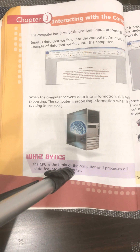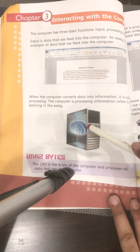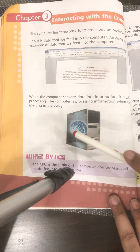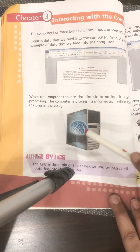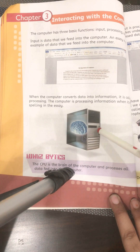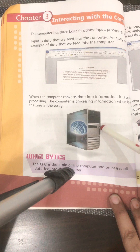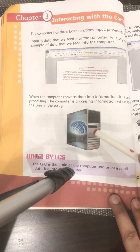All the data entered into the computer is processed with the help of the CPU — the central processing unit. The CPU is known as the brain of the computer as it controls all the functions of the computer, just like the human brain controls all the functions of the human body. The CPU also connects the different parts of the computer to each other and helps communicate information between them.